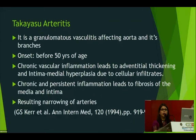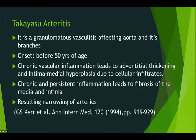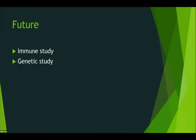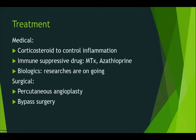Takayasu arteritis is a granulomatous vasculitis affecting the aorta and its branches, with onset before 50 years of age. Chronic vascular inflammation leads to adventitial thickening and intimal-medial hyperplasia due to cellular infiltration. Persistent inflammation leads to fibrosis of the media and intima, resulting in narrowing of the artery. Other imaging modalities include conventional angiography, MR angiography, and PET scan to measure the intensity of vascular inflammation.